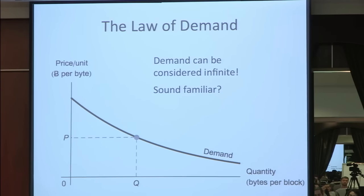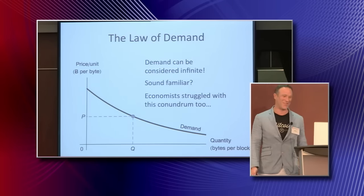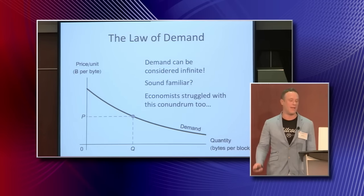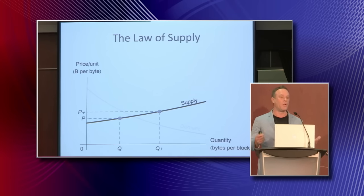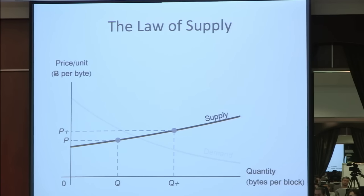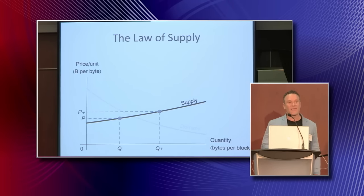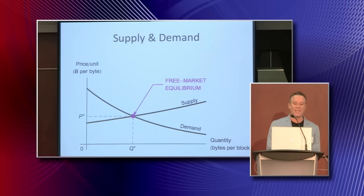This is something I hear regarding the block size limit debate. People say we need a limit because the demand for block space can be considered infinite. Well, economists struggled with that conundrum too, but they solved it over a hundred years ago. The way they wrapped their head around it was to postulate the law of supply, which says that producers will only produce more if they get paid more to do so. Bitcoin miners will only make their blocks bigger if they get more Bitcoins for doing so. The supply curve has a positive slope; the demand curve has a negative slope, and the two intersect at the free market equilibrium — P star and Q star, the equilibrium quantity produced. Even though demand can be considered infinite, we still get a finite quantity produced.